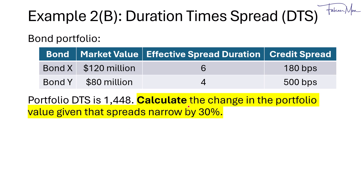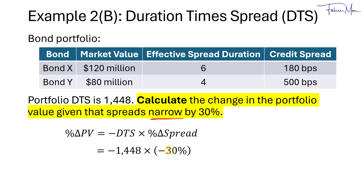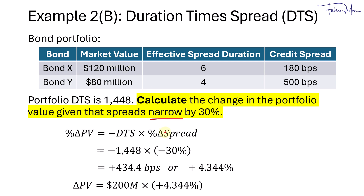Now, if spreads narrow by 30% — a negative change — using the DTS we take the negative of DTS times the percentage change in the spread of negative 30%, giving us positive 434.4 basis points, or 4.344%. To get the monetary change, we multiply the portfolio's market value of $200 million by 4.344%, giving a positive $8.688 million change in portfolio value.